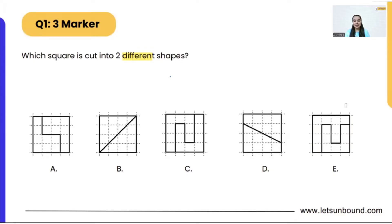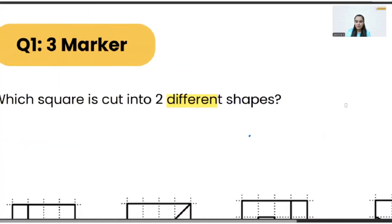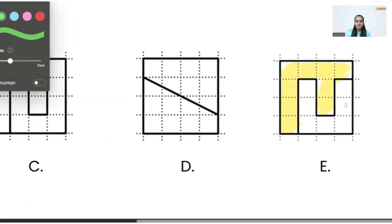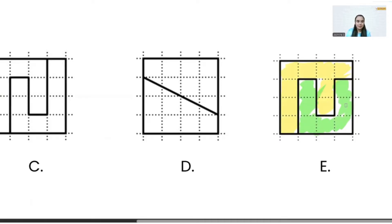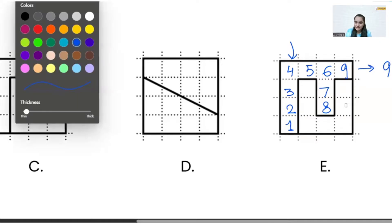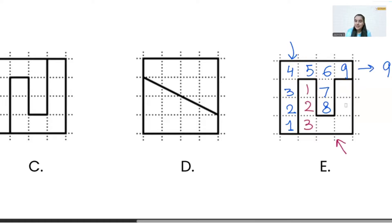If you look at the options carefully, option E is made up of two different shapes. Let me zoom in on option E — there are two shapes here. This is shape number one, and then we have shape two. Now, if we check shape one in this square, it is made up of one, two, three, four, five, six, seven, eight, and nine squares — so nine squares. If we check the second shape, it is made up of one, two, three, four, five, six, seven squares.